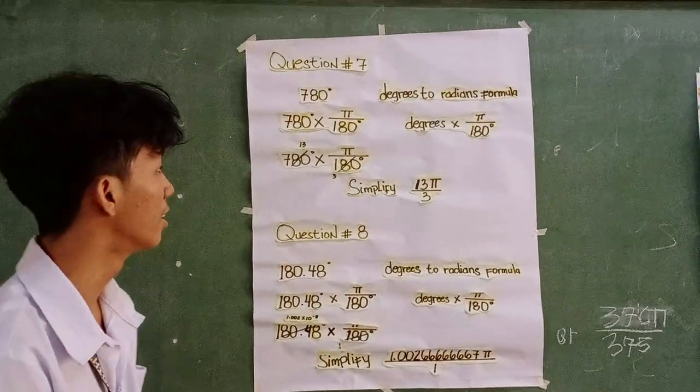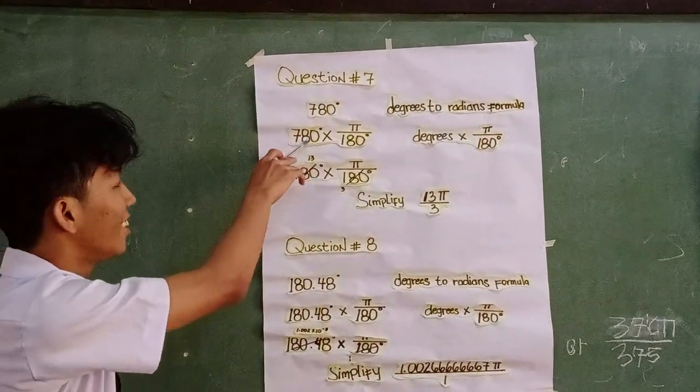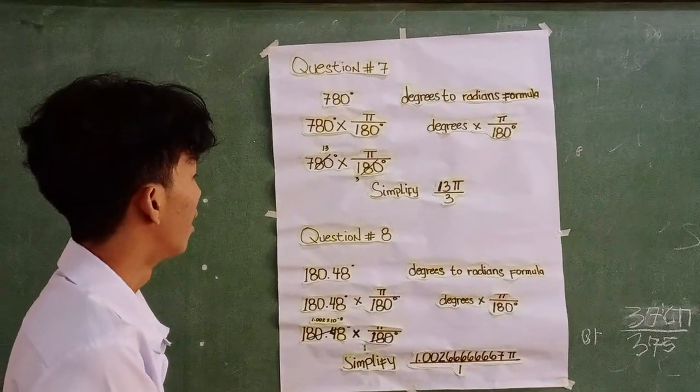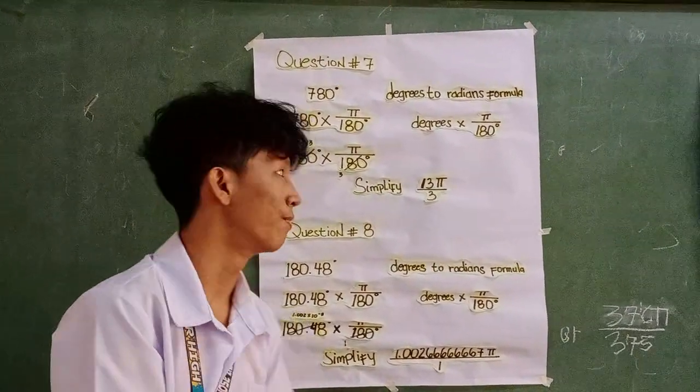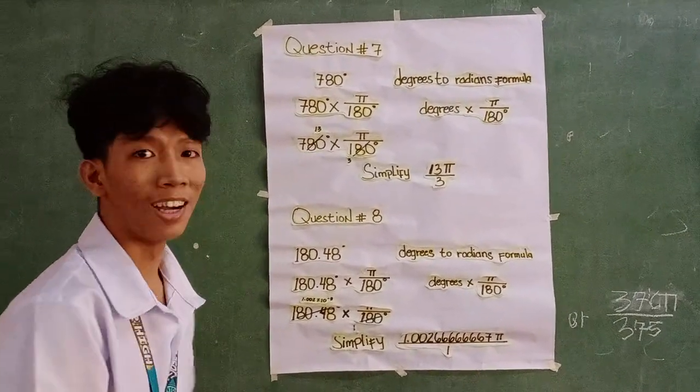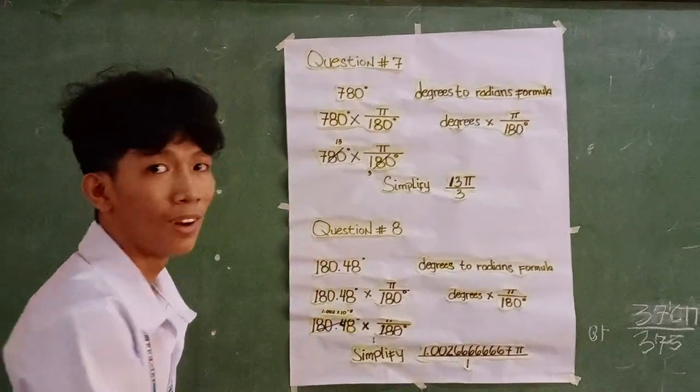To convert 780 degrees: 780 degrees times pi over 180 degrees. We find the greatest common factor which is 45, and then 780 divided by 45 is 13.